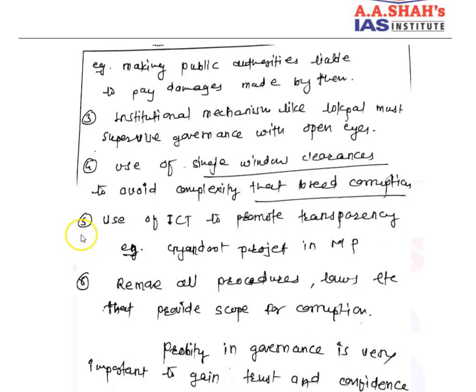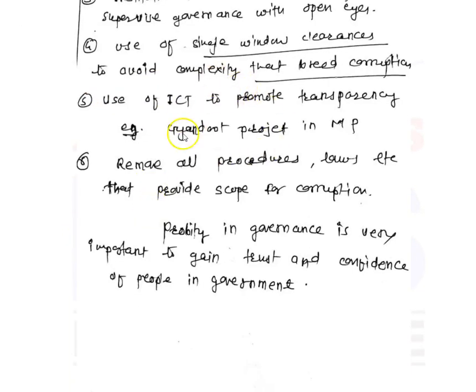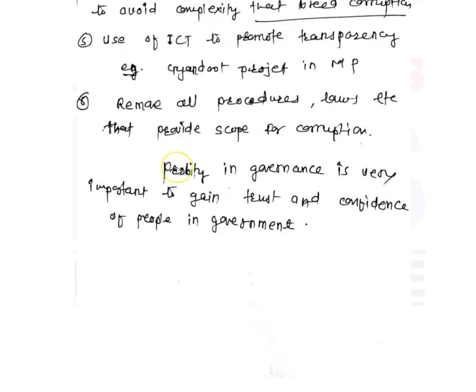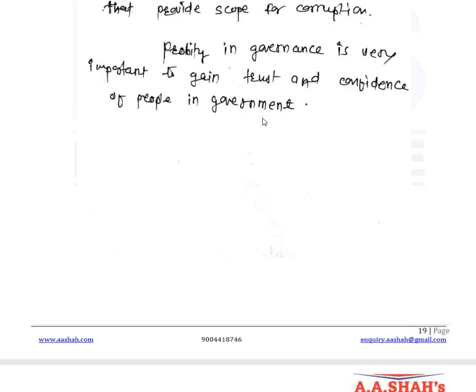Use of ICT — information and communication technology — promotes transparency. We have to remove all procedures and laws that provide scope for corruption. Some procedures in the system automatically or by default promote corruption, and removing them is necessary for probity in governance. Probity in governance is very important to gain the trust and confidence of the people in the government.